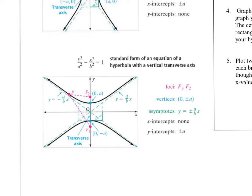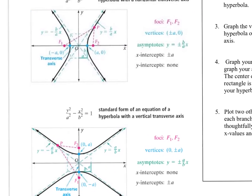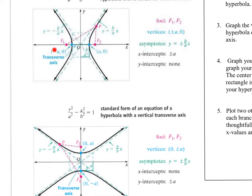I don't want to get too deep into the A, B, C part, but it's important to know that the value underneath y corresponds to the up-and-down part of the hyperbola. In this section, all of them are centered about the origin. The value underneath x relates to what's happening on the x-axis.